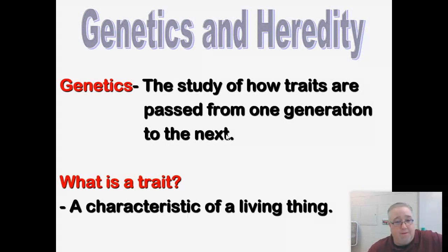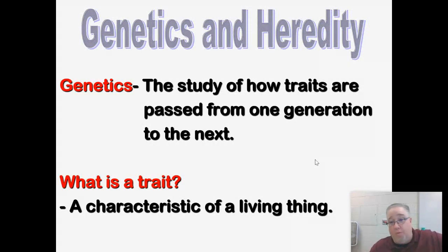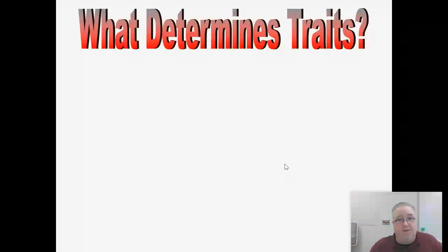The definition of a trait is very simple — it's just a characteristic of a living thing. So if I have type A blood, that's a characteristic I have. If you have type O blood, then we have a different characteristic. That's what gives us genetic variety — variation amongst our species.